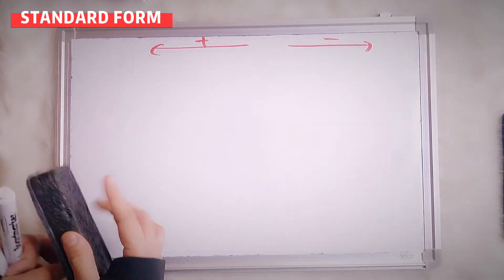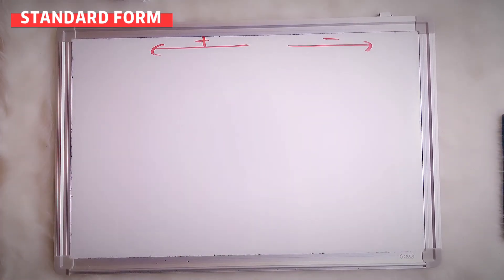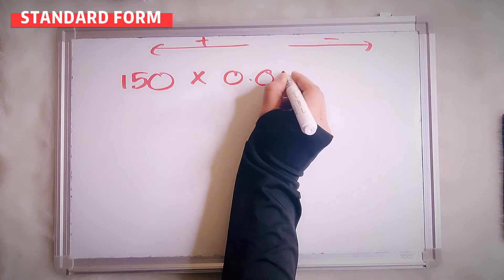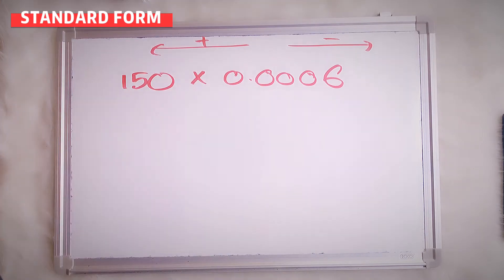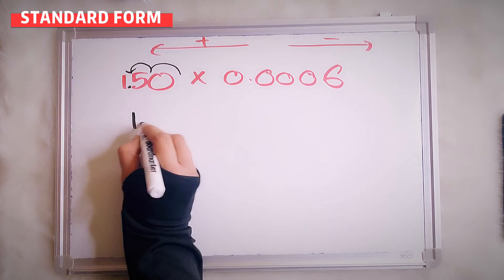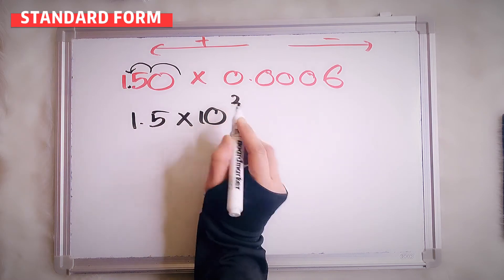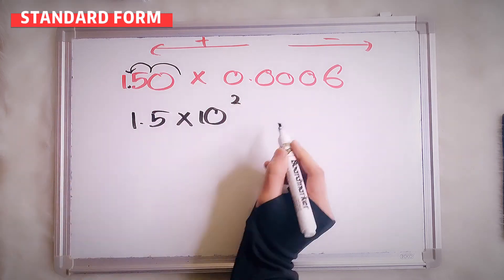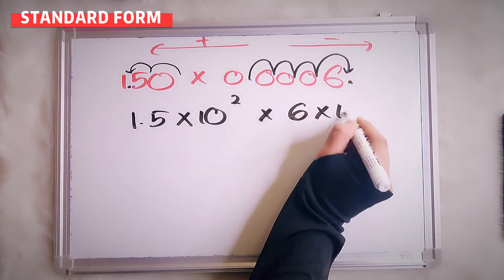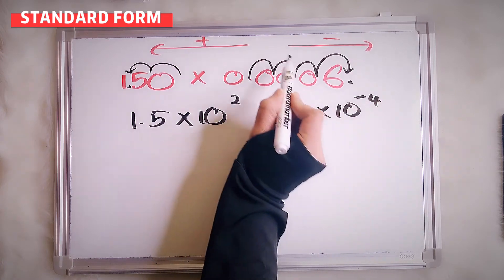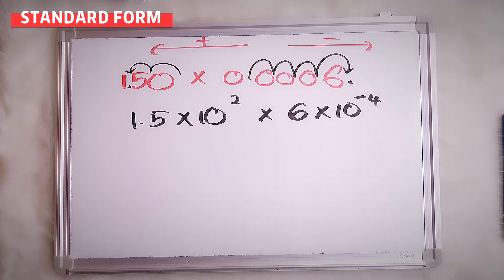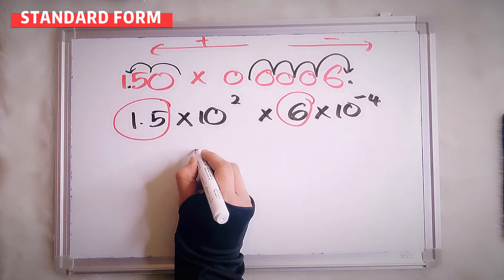Just follow this method. Next: 150 multiplied by 0.0006. Change 150 first: count 1, 2 — that means here is 1.5 multiplied by 10 to the power of 2. The sign is positive because we move to the left side. For 0.0006: count 1, 2, 3, 4 — so it's 6 times 10 to the power of 4, sign is negative because we move to the right side. Now 1.5 multiplied by 6 equals 9.